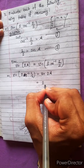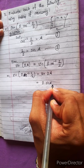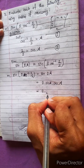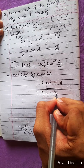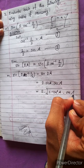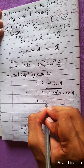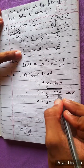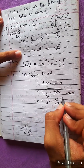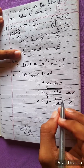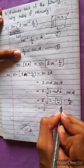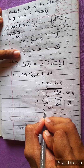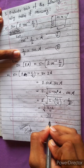Now sin(2A) = 2·sin A·cos A. This is the formula. Then sin A = √(1 − cos²A) = √(1 − (1/2)²), and cos A = 1/2. This becomes 2 × √(1 − 1/4) × 1/2. The 2s cancel. Now it becomes √((4−1)/4) = √(3/4), which gives √3/2.